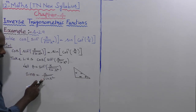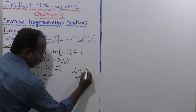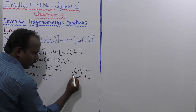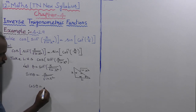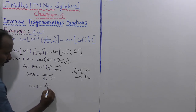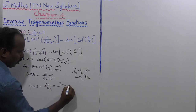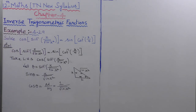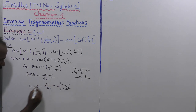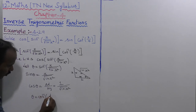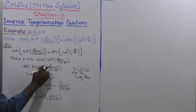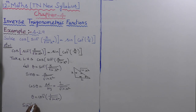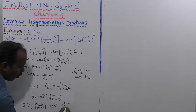So sin theta is equal to x over root of 1 plus x square. The remaining value is 1, which is the adjacent side. Next, to find cos theta: cos theta equals adjacent side divided by hypotenuse, that is equal to 1 divided by root of 1 plus x square. So theta equals cos inverse of 1 divided by root of 1 plus x square. Replacing theta with sin inverse of x by root of 1 plus x square: sin inverse of x by root of 1 plus x square equals cos inverse of 1 divided by root of 1 plus x square.